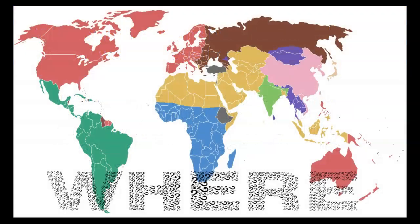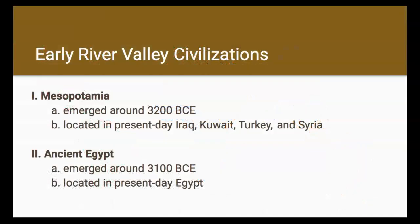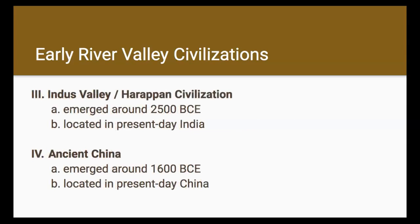So where did the earliest civilizations rise? In this unit, we'll be looking at the four early river valley civilizations. Those start with Mesopotamia, which is located in present-day Iraq, Kuwait, Turkey, and Syria. The next is ancient Egypt, located in present-day Egypt. Next, we move on to the Indus Valley, or Harappan civilization, located in present-day India. And finally, we wrap up with ancient Chinese dynasties, located in present-day China.